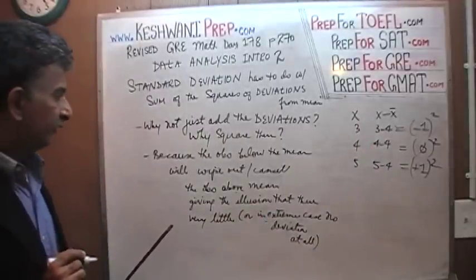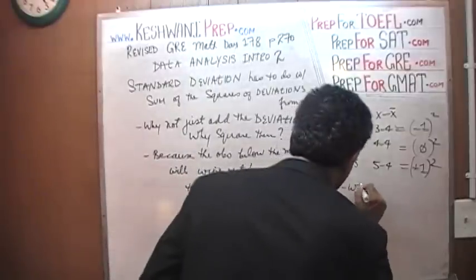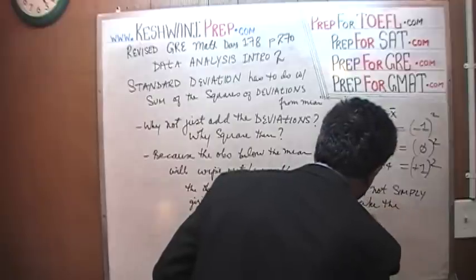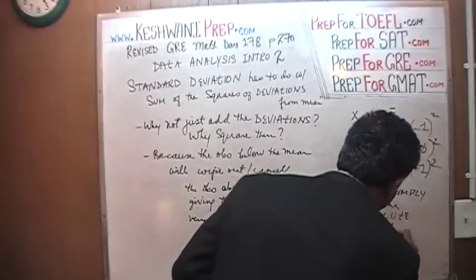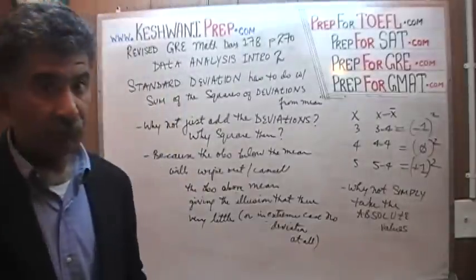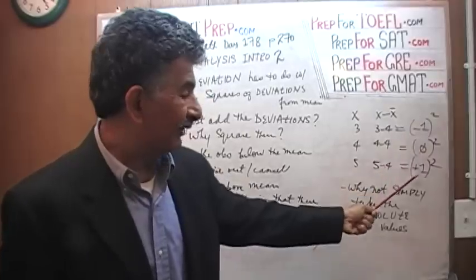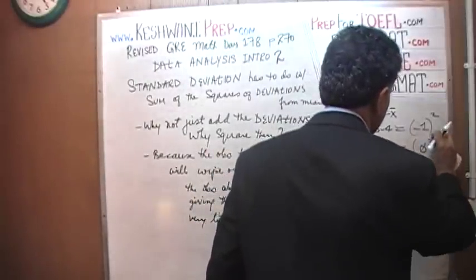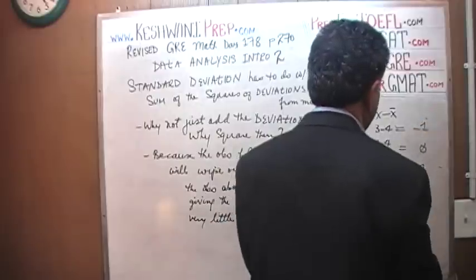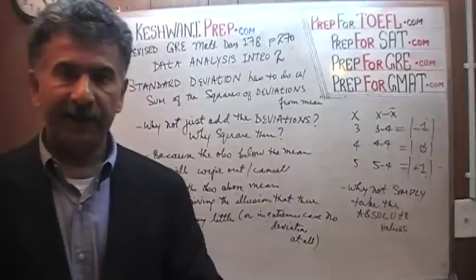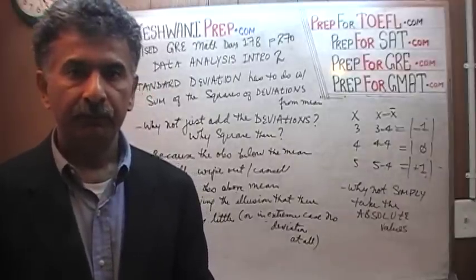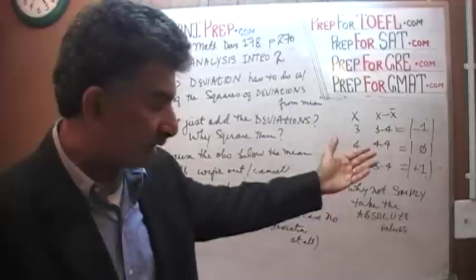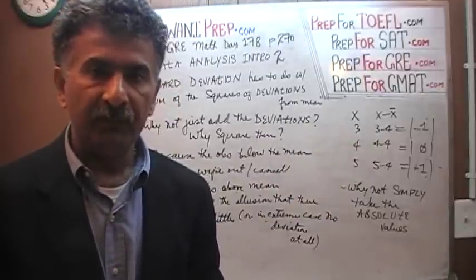The next question that comes to mind is: why not simply take the absolute value? If your concern is that negative one will cancel out positive one, then why not just take the absolute value of each deviation? That would preserve the negative numbers from killing the positive numbers. So why do we take the squares? There is a second reason for it. The first reason is to prevent negatives and positives from canceling each other out.